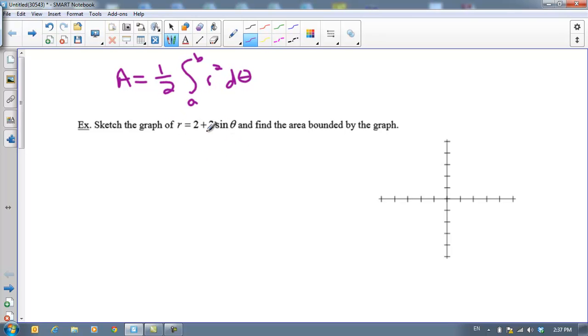Let's sketch the graph of r = 2 + 2sin(θ) and find the area bounded by the graph. Now, it would be really nice if you already knew that this was a cardioid, and you should. But let's say you just don't know that this is a cardioid. Then what you want to do is make yourself a table of values for theta and for r.